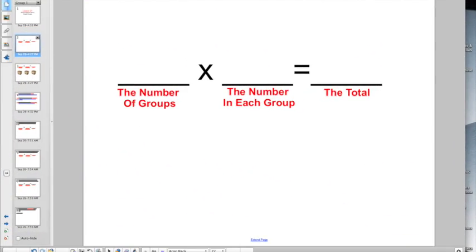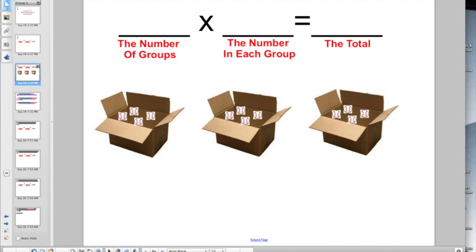Just a reminder, the way to set up any type of multiplication story problem, they want you to visualize the number of groups times the number in each group, and that's how I'm going to give you the total. I went ahead and made you a little picture here. When we're talking about the number of groups, like three different boxes, and we have four baseballs in each box. So the number of groups, well I have three boxes, those are my groups. Times the number in each group, I have four in each group because I have four baseballs in each box, and that's going to give me the total number of baseballs, which would be 12.